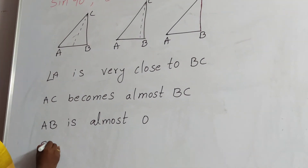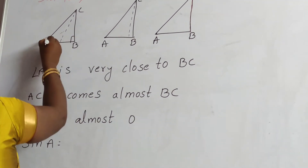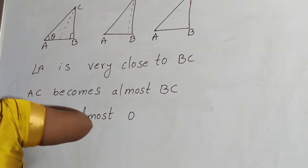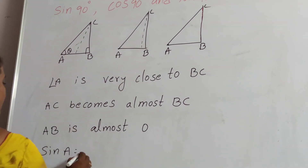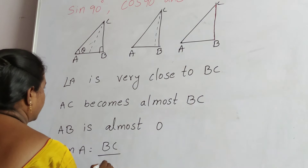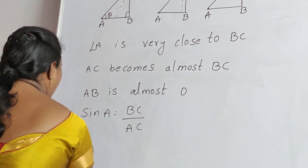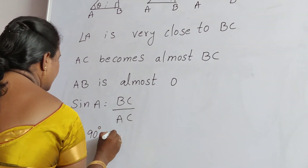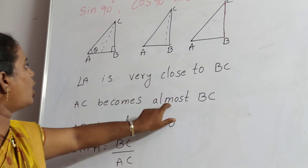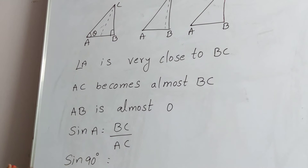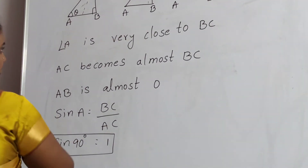Find out the values of sin A first. Sin A means opposite side by hypotenuse, which is BC by AC. Since AC becomes almost the same as BC, both are equal, so sin 90 degrees equals 1.